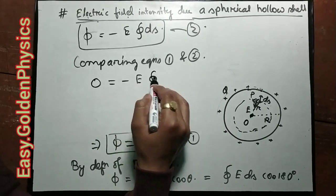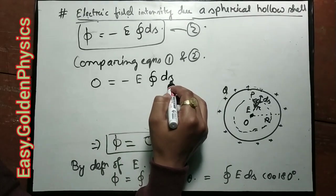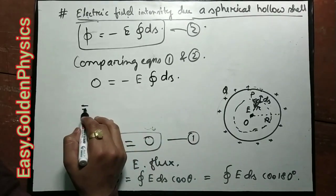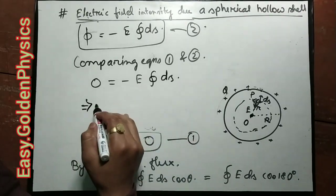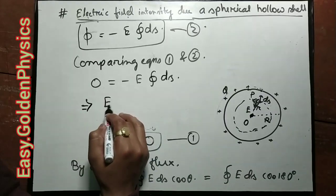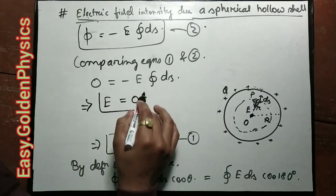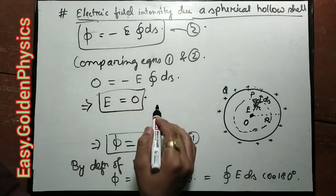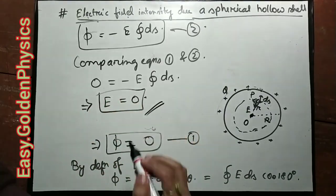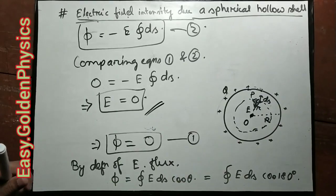The electric flux is zero. We are now inside the hollow spherical shell, so the electric field inside is zero.